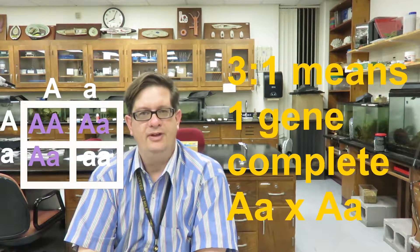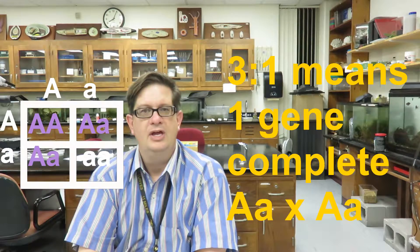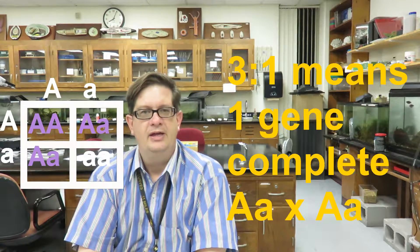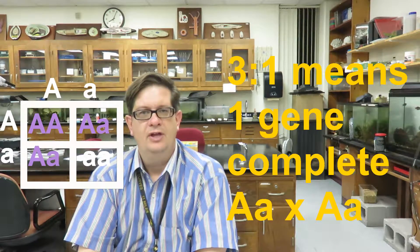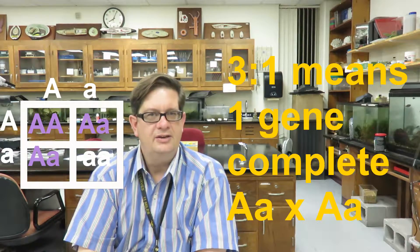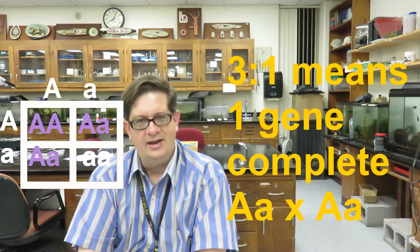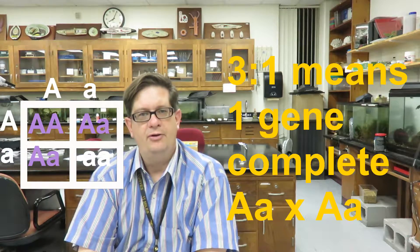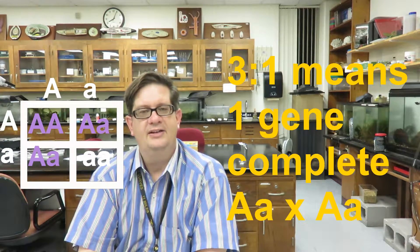If you have a 3 to 1 ratio in the phenotypes of the offspring in a problem, you know that there is one gene involved, that one of its alleles has complete dominance over the other one, and that both parents are heterozygous for that gene.